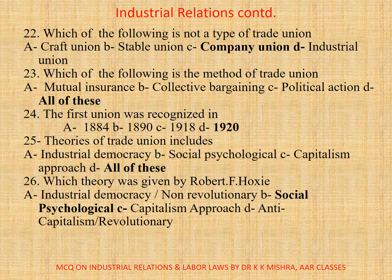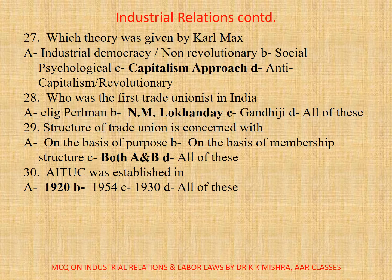Question 24: The first trade union was recognized in. Correct option is D. 1920. Question 25: Theories of trade union includes A. Industrial democracy. B. Social psychological. C. Capitalism approach. D. All. Correct option is D. All. Question 26: Which theory was given by Robert F. Hoxie? Correct option is B. Social psychological theory. Question 27: Which theory was given by Karl Marx? Correct option is C. Capitalism approach. Question 28: Who was the first trade unionist in India? Correct option is B. N.M. Lokhande.